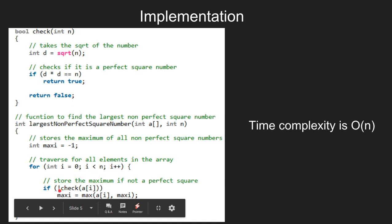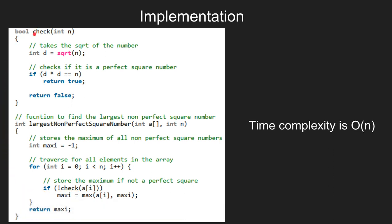We check whether it is a non-perfect square number or not using the check function. Inside the check function, we store integer variable d with the square root of n. Using an if condition, we check whether it is a non-perfect square number or not. If it is so, then we return true; otherwise, we return false.